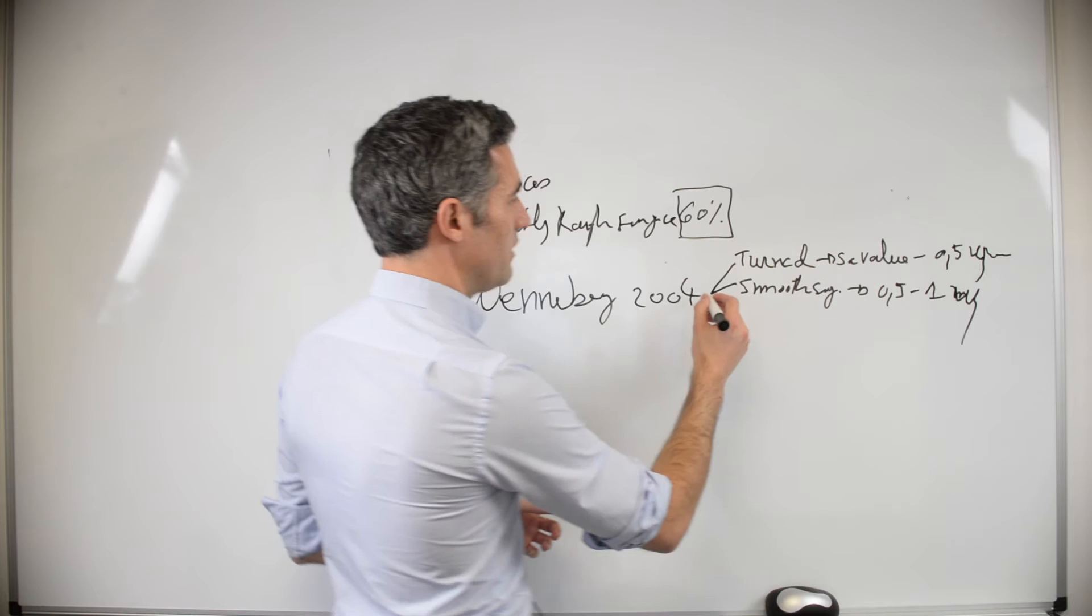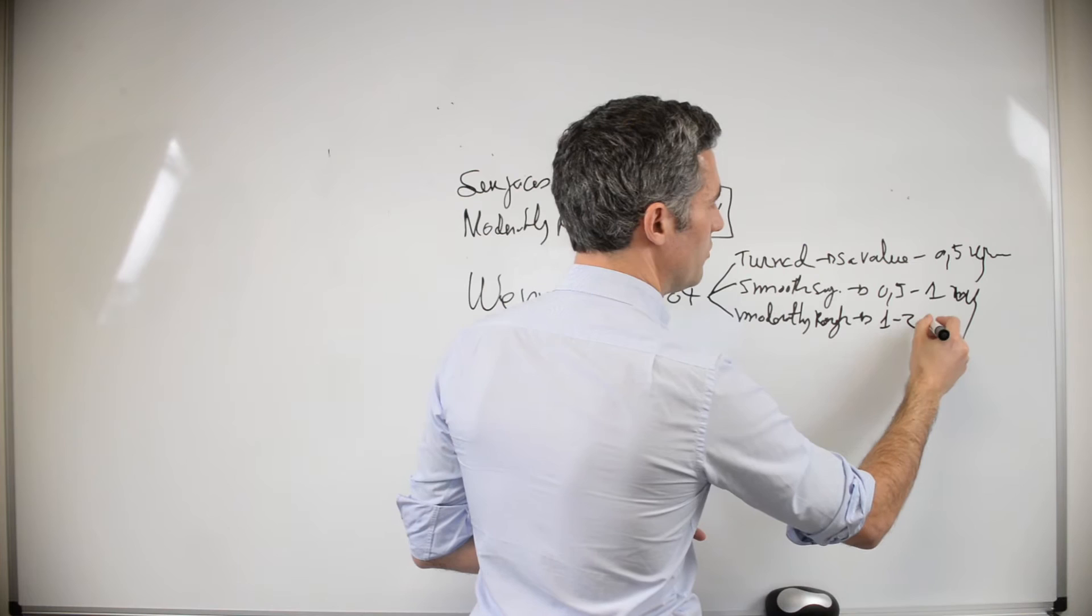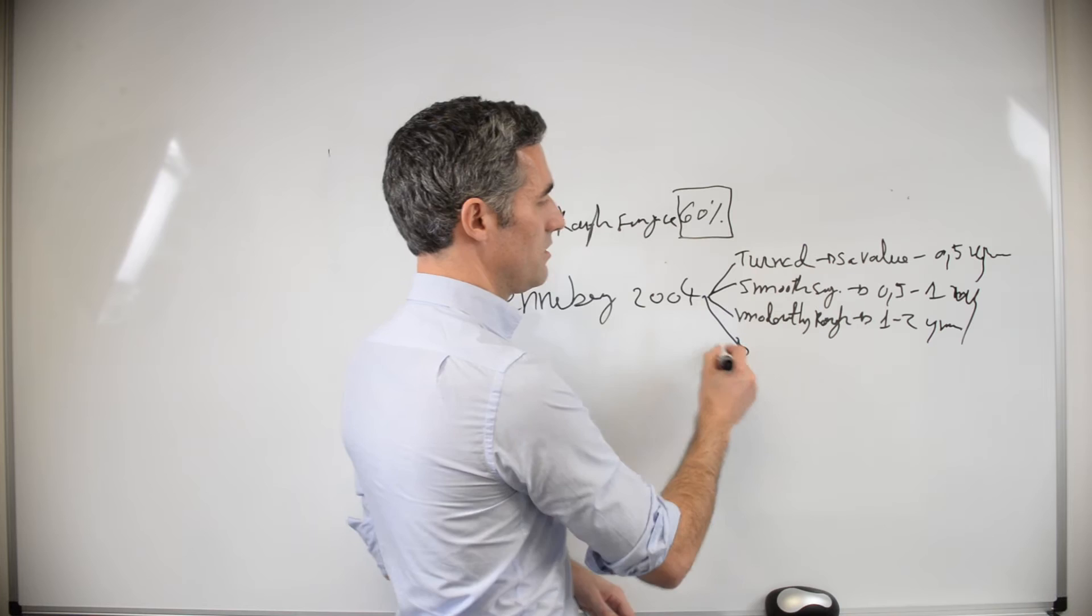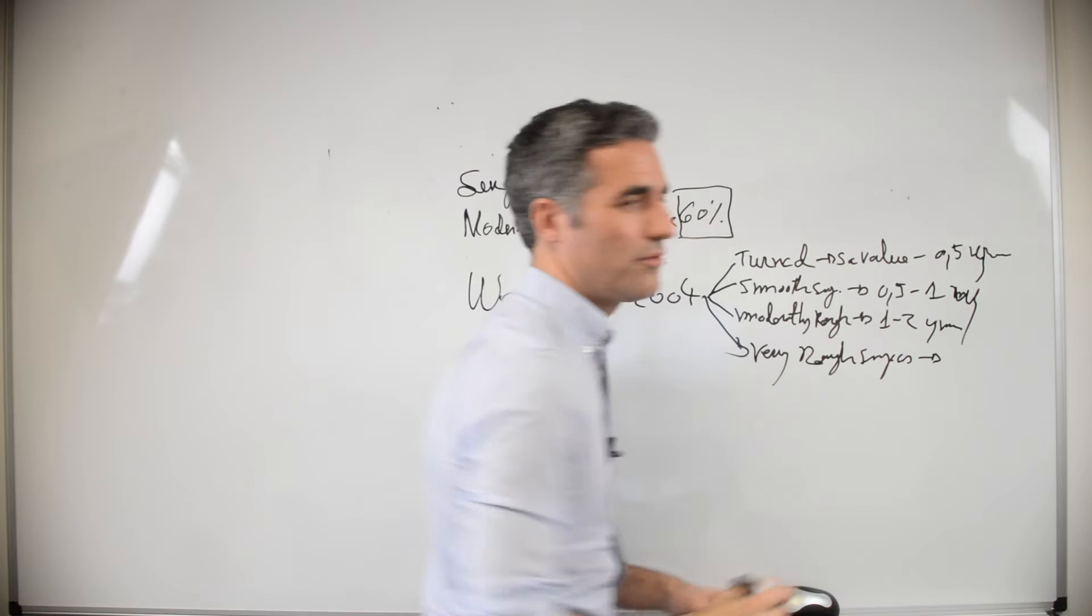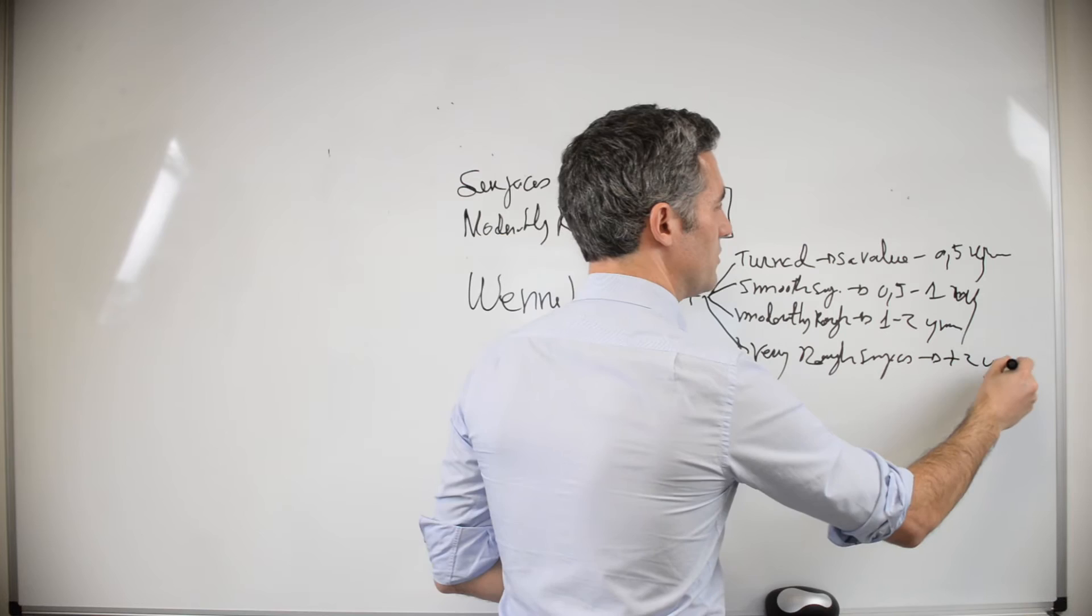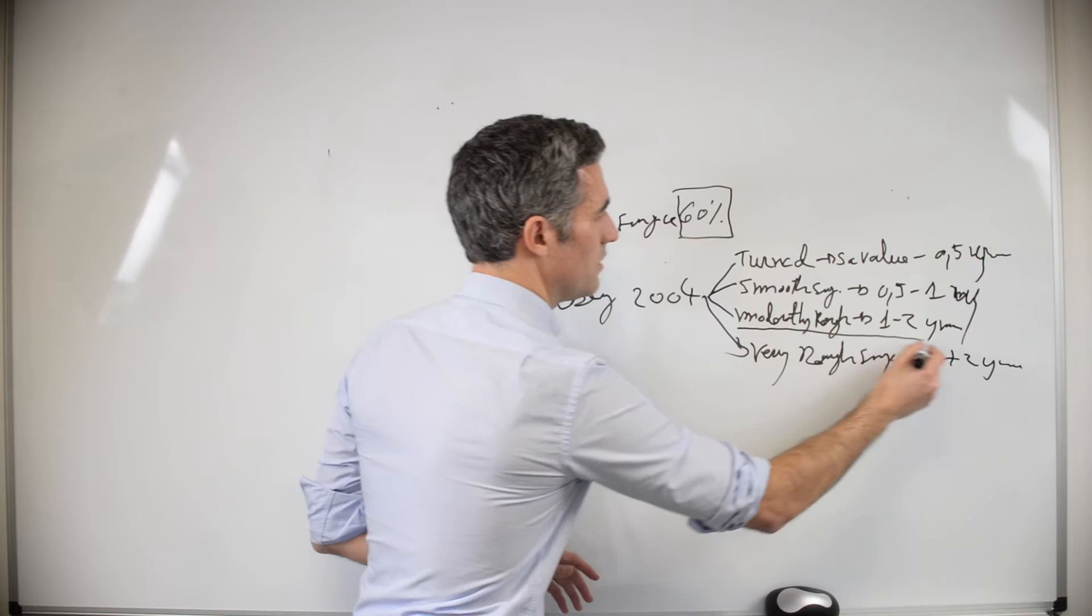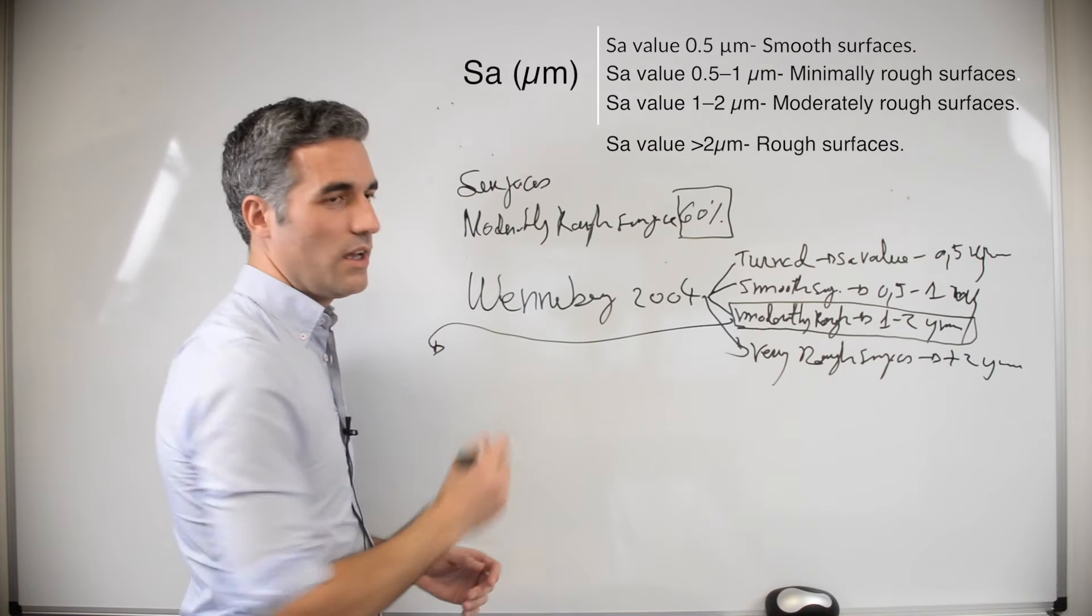The other are the moderately rough surfaces that are between 1 and 2 microns. We are going to talk a lot about this one today. And there is another surface, the very rough surfaces, that have an SA value more than 2 microns. In the market, most of the brands have an SA value that is in this range, between 1 and 2 microns.